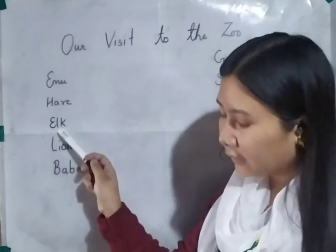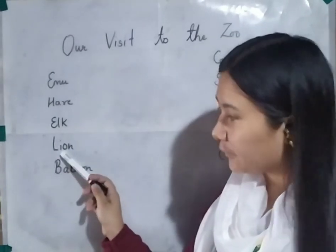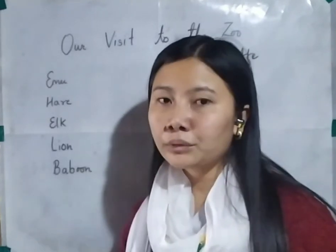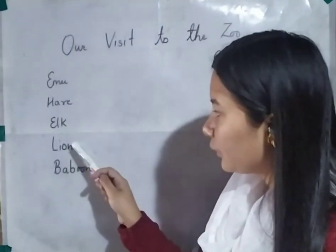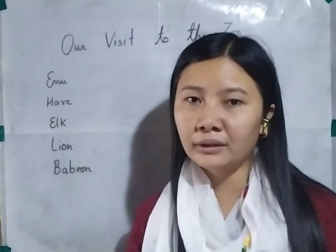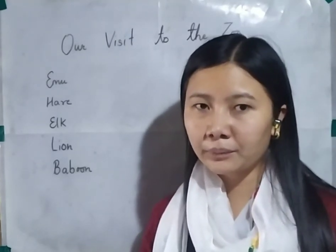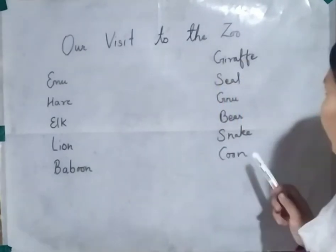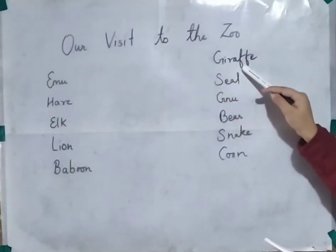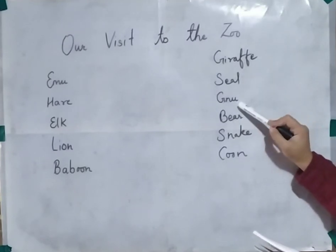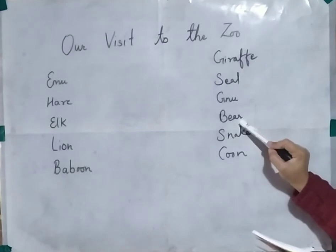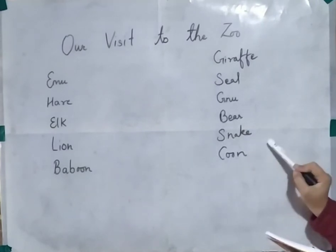On the left hand side: the first picture is that of an emu, the second is a hare, the third is an elk, the fourth is a lion, and the fifth is a baboon. On the right hand side: the first picture is that of a giraffe, the second is a seal, the third is a nu, the fourth is a bear, the fifth is a snake, and the last one is a coon. Write these names beneath the pictures so it's easier for you to associate the names with the animals.